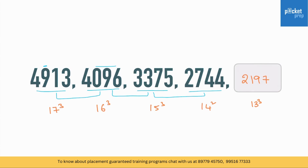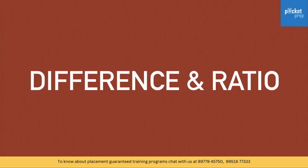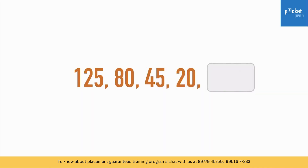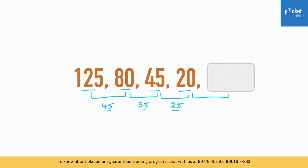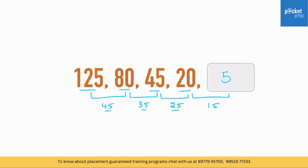Generally in exams, the series won't be that direct. The second type uses either difference or ratio. For example: 125, 80, 45, 20. There's no direct square or cube, so go for the difference. 125 minus 80 is 45, 80 minus 45 is 35, 45 minus 20 is 25. The pattern is 45, 35, 25, so the next difference is 15. Therefore the next number is 20 minus 15, which is 5.